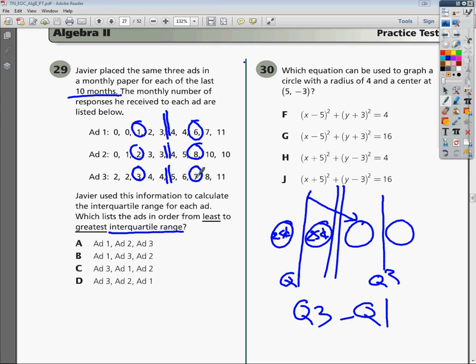Now I need to find the range between them, so I'm just going to subtract. For ad one, I do six minus one, so my interquartile range is five. For ad two, I do eight minus two, my interquartile range is six. For ad three, I do seven minus three, and my interquartile range is four.